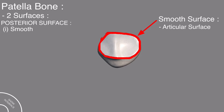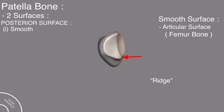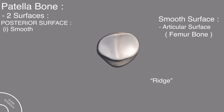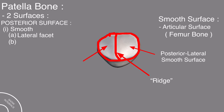The smooth posterior surface is actually the articular surface, and it articulates with the femur bone. When this smooth surface is viewed from the side, you can clearly see a ridge present in the smooth surface of the patella bone. This ridge divides the posterior smooth surface into two: the large posterior articular surface is the lateral one, and the small posterior articular surface is the medial one.